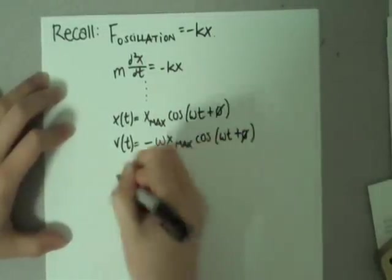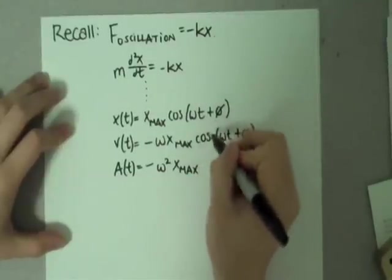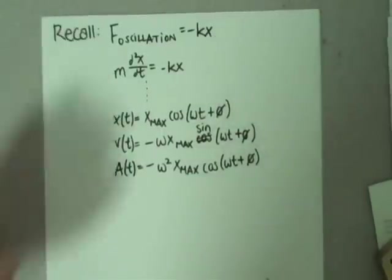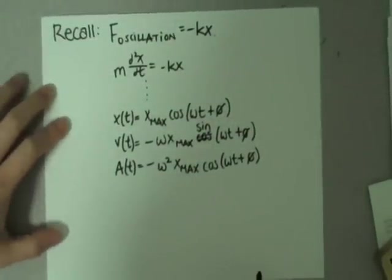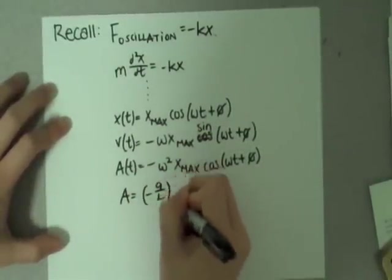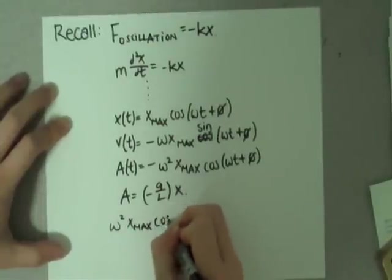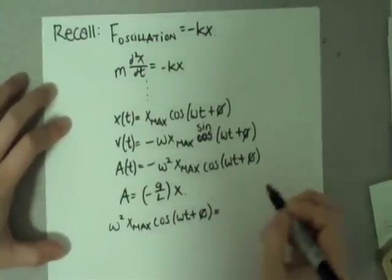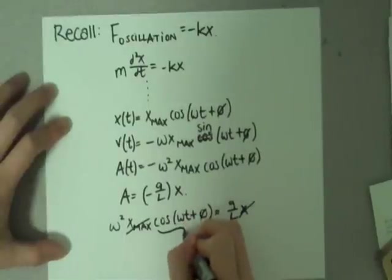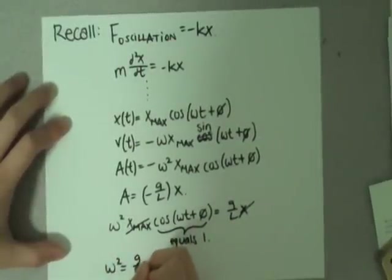If we take the derivative of x(t), we get the velocity, and then the derivative of the velocity gives us acceleration: A equals negative omega squared times x-max times cosine(omega t plus phi). Plugging this back into the equation we derived earlier — that acceleration equals negative g over L times x — we discover that omega squared times x-max times cosine(omega t plus phi) equals g over L times x. The x and x-max are actually the same since we're dropping from maximum displacement, and cosine(omega t plus phi) equals 1 at maximum. Therefore, omega squared equals g over L.